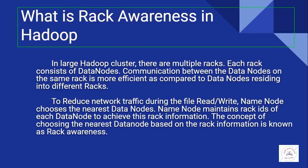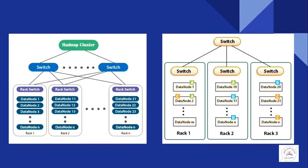Communication between data nodes on the same rack is more efficient compared to data nodes residing in different racks. To reduce network traffic during file read and write operations, the name node chooses the nearest data nodes. The name node maintains rack IDs of each data node. The concept of choosing the nearest data nodes based on rack information is known as rack awareness. In this picture you can see how data nodes reside in the same rack versus different racks.